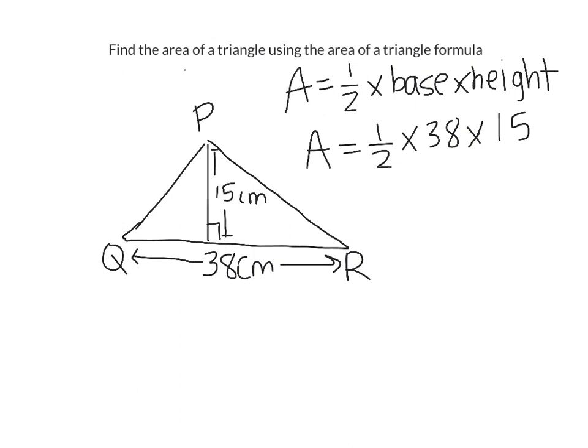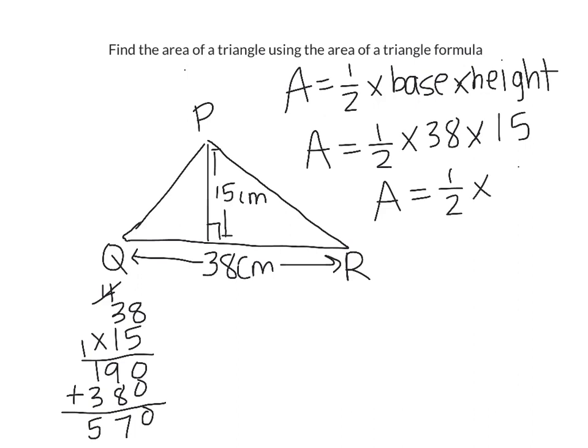So off to the side we're going to go ahead and multiply 38 times 15. 5 times 8 is 40. 5 times 3 is 15 plus 4 is 19. 1 times 8 is 8. 1 times 3 is 3. Then we go and add. 0 plus 0 is 0. 9 plus 8 is 17. 1 plus 1 plus 3 is 5. So now we have one half times 570 is equal to our area.